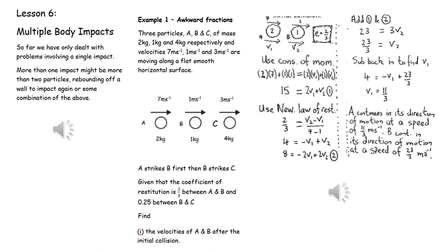We initially just consider the collision between A and B, and we apply conservation of linear momentum and Newton's experimental law to create a pair of simultaneous equations with the unknown velocities after the collision.